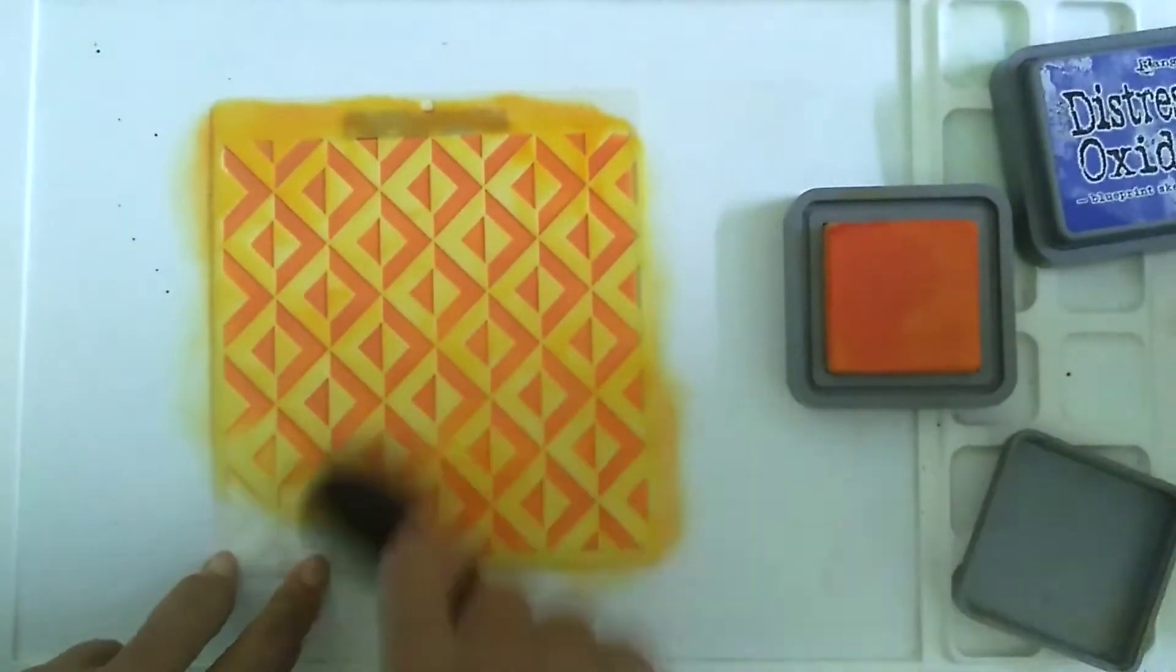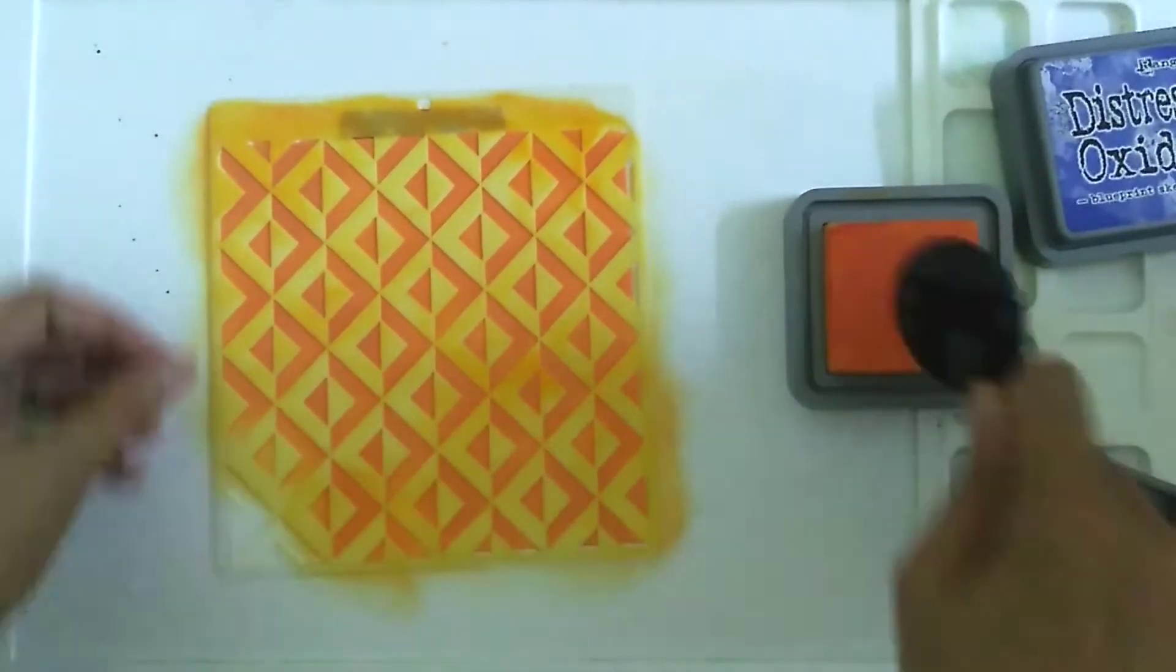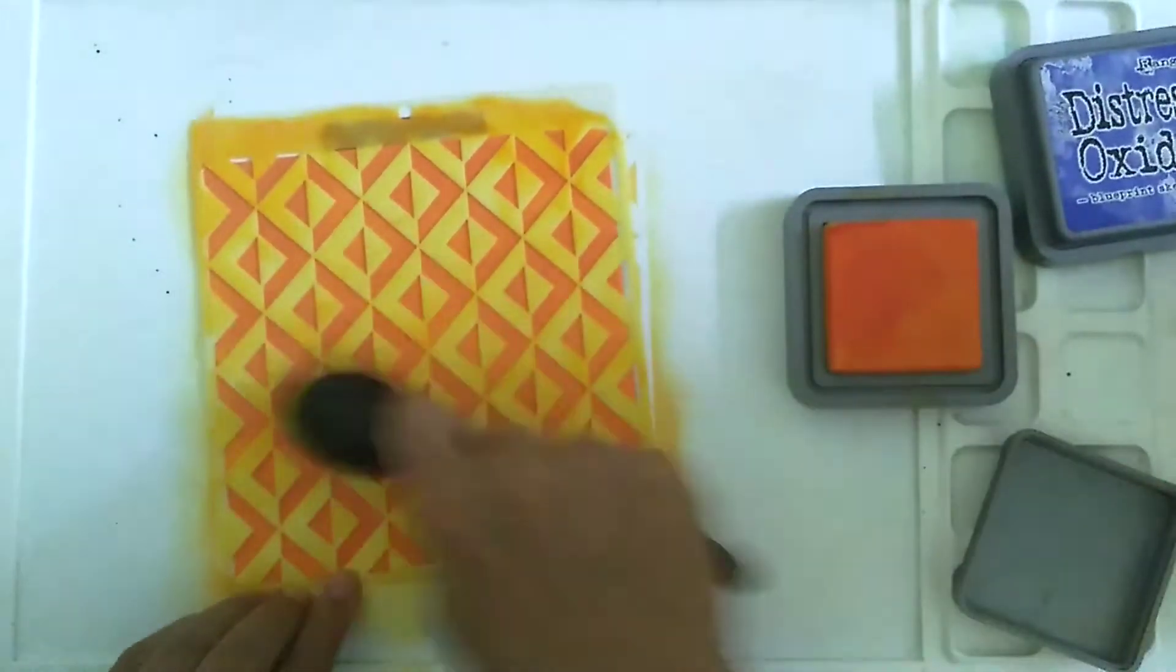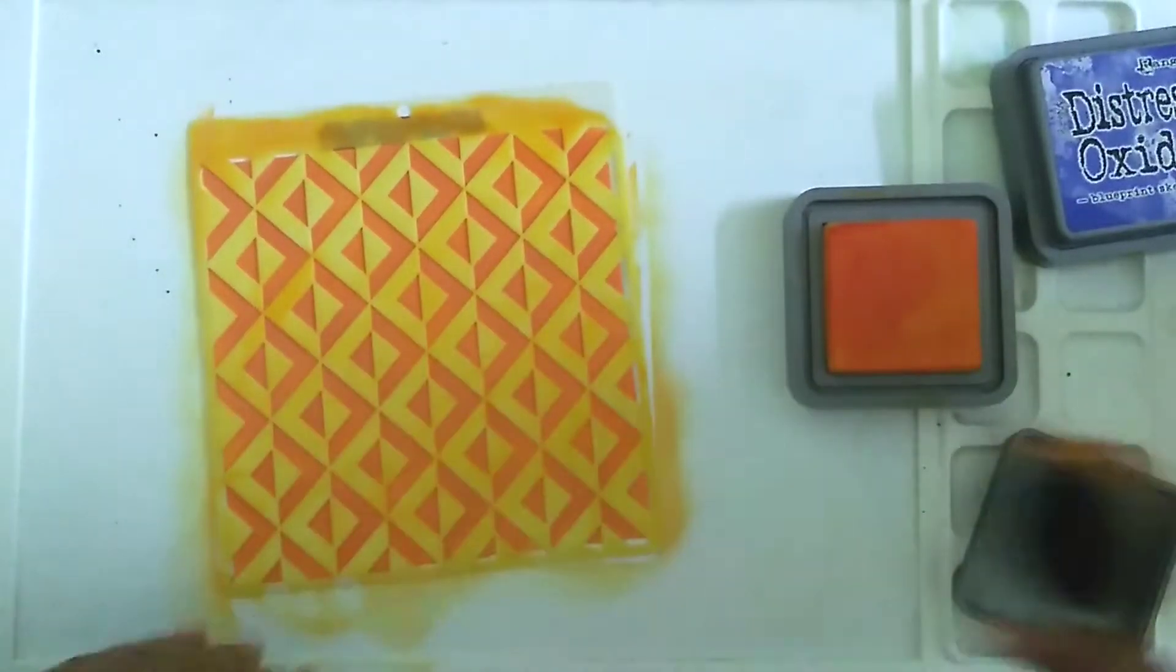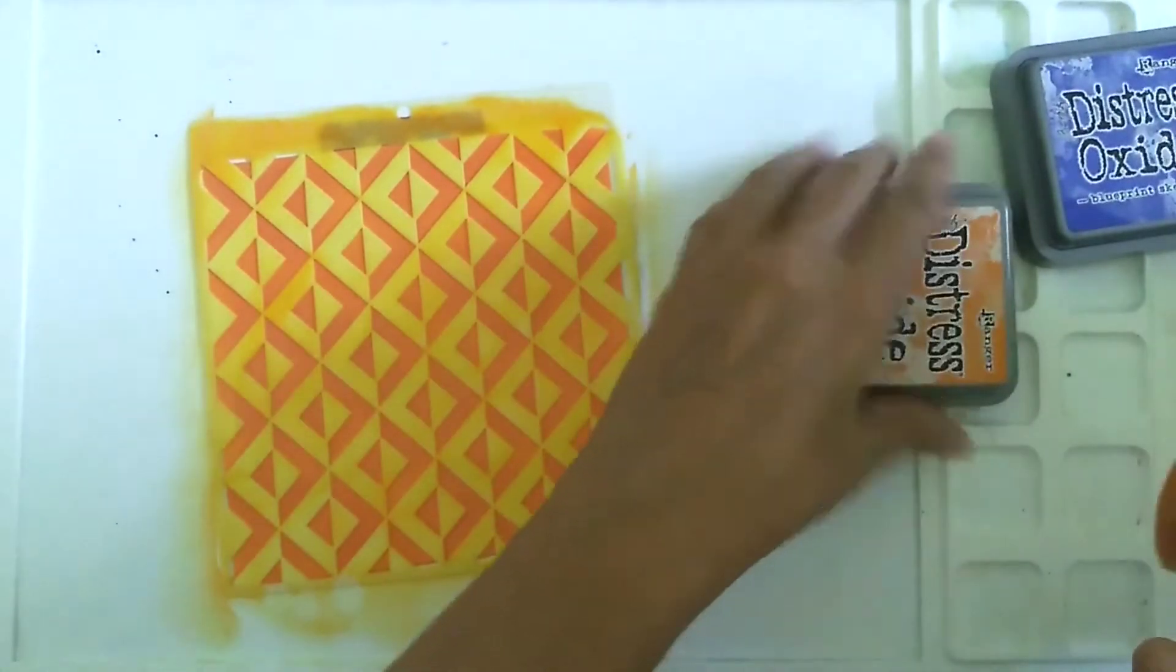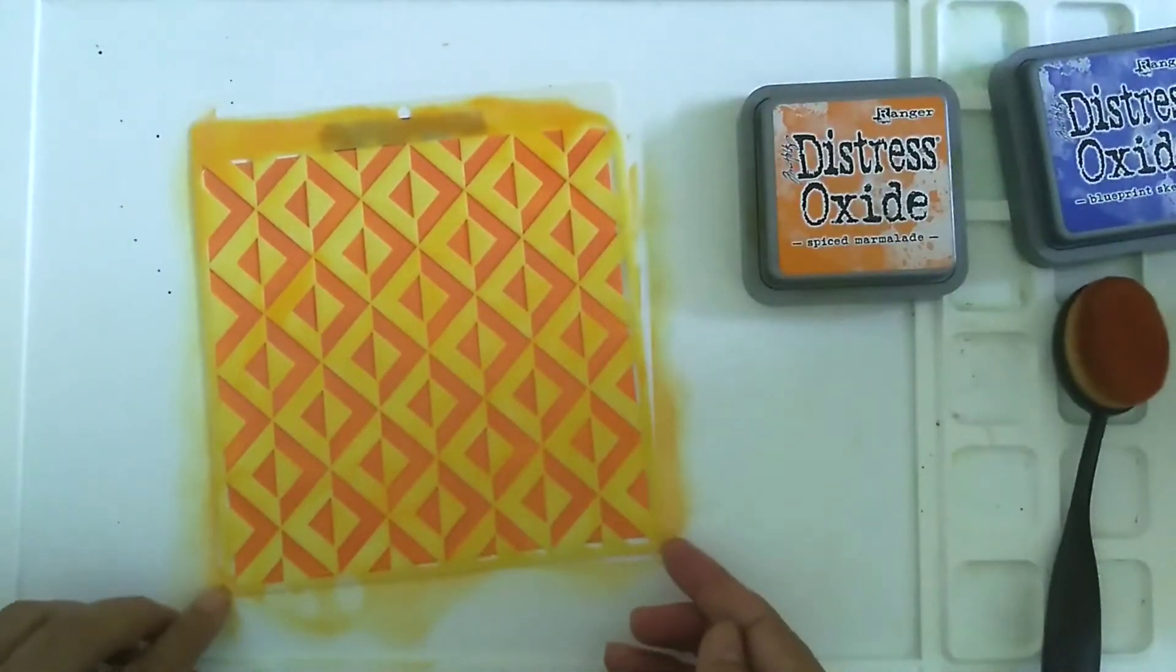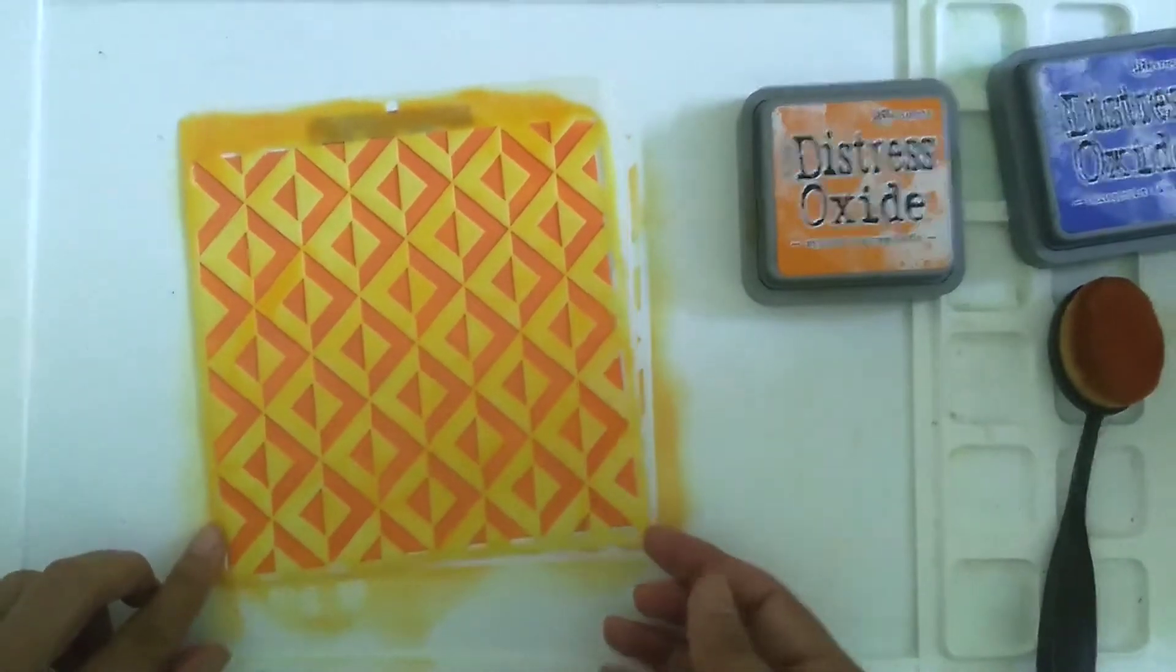You'll see I'm quickly covering the entire background evenly with the color. Just make sure you go over any patches that you feel are light or any places where you feel that there might be white gaps remaining. And now our inking is done, and I'm going to lift the stencil.